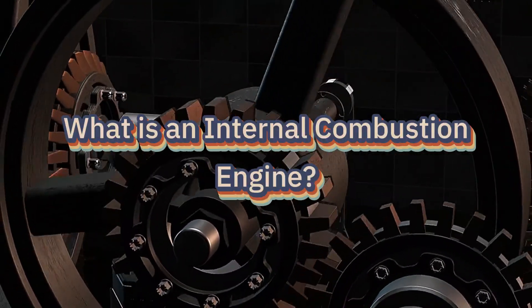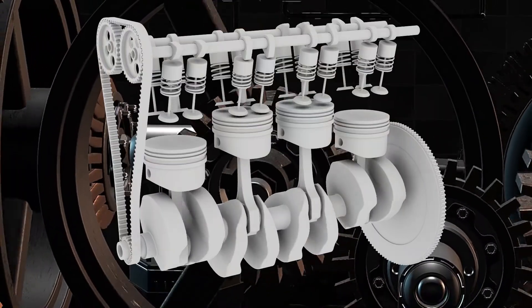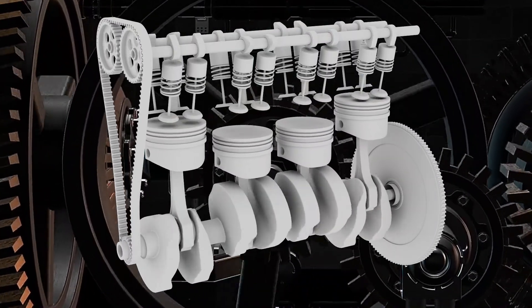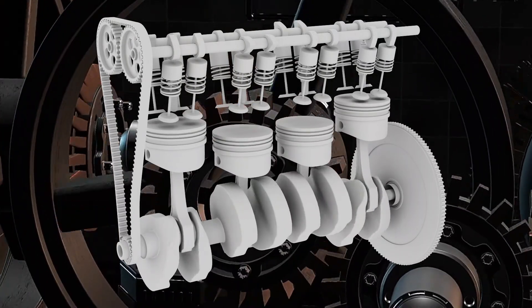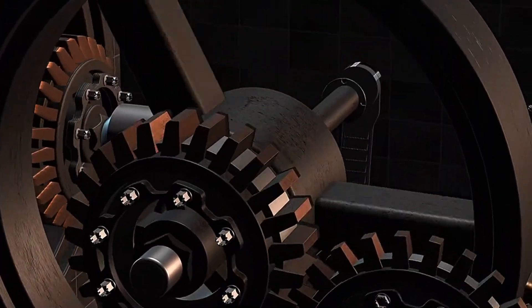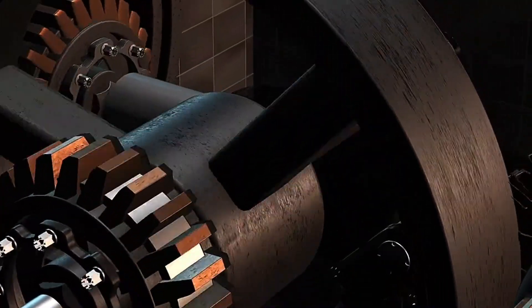What is an internal combustion engine? At its core, an internal combustion engine is a heat engine. It converts chemical energy from fuel to mechanical energy through controlled explosions, combustion, that occur inside the engine itself. This sets it apart from external combustion engines, like steam engines, where the burning takes place outside the working chamber.